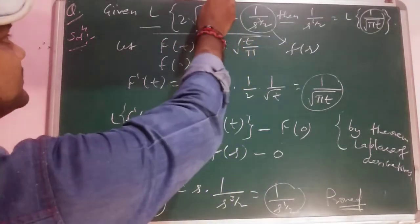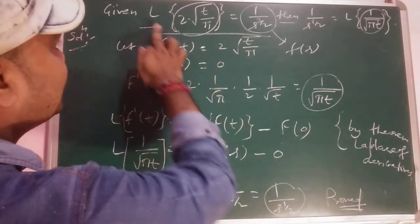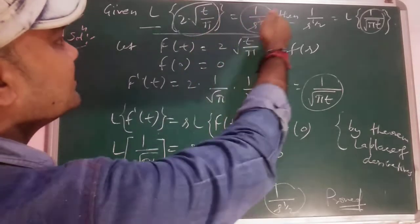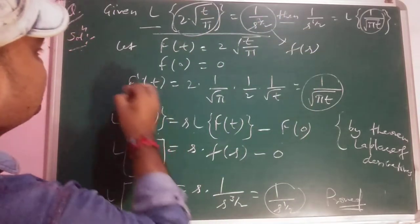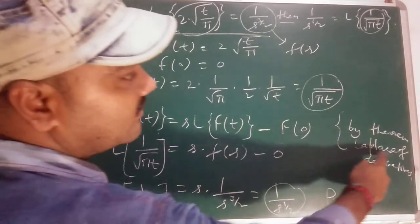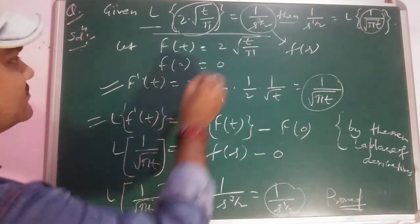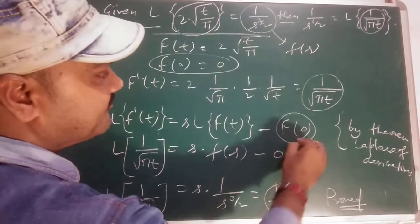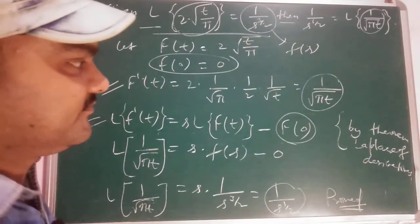Simply in such questions: take this term as f(t), which gives us F(s) directly. Then take its derivative, apply the Laplace of derivatives theorem — for which we need f(0), which we calculate in advance. After that nothing remains.